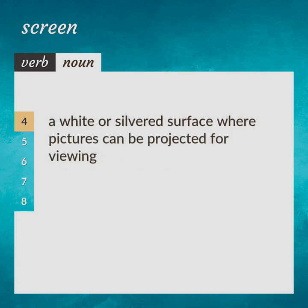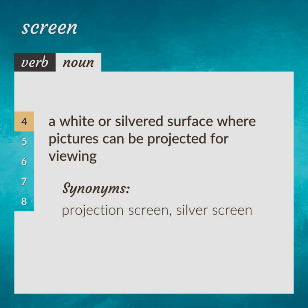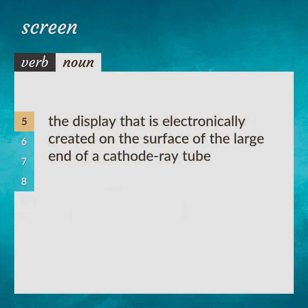A white or silvered surface where pictures can be projected for viewing. Projection screen, silver screen. The display that is electronically created on the surface of the large end of a cathode ray tube. CRT screen.